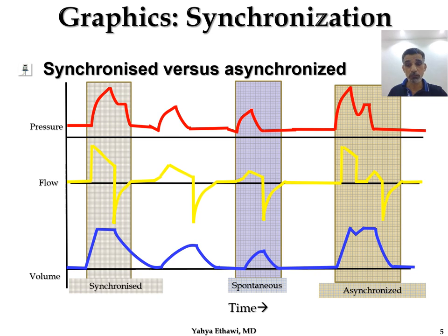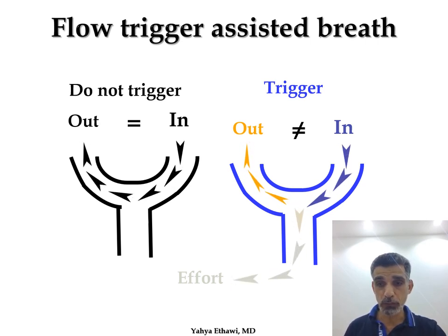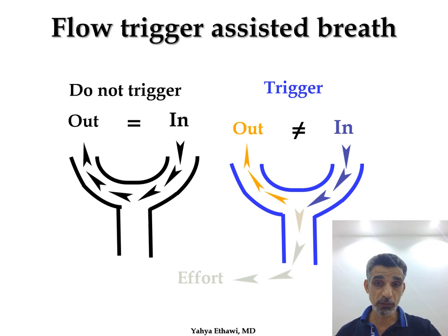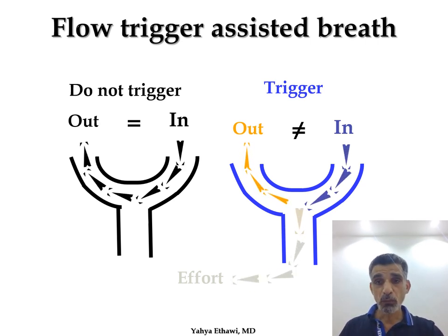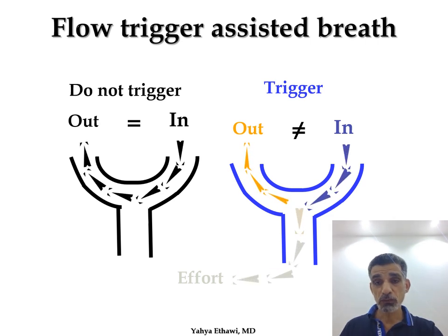From the graphs you can judge whether to use a different mode, apply sedation, wean, or escalate — it depends on the patient and disease process. The graphics are also important for showing you the trigger. The trigger is vital to rest or train the patient, depending on the phase of ventilation and whether you're weaning. I use the trigger to wean from ventilation — to train the diaphragm and train babies to breathe before extubation.